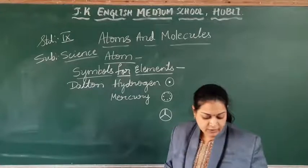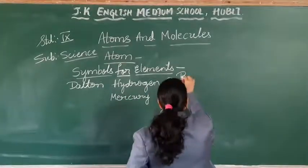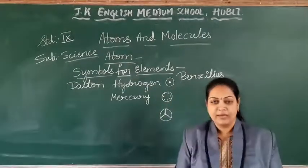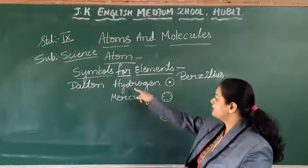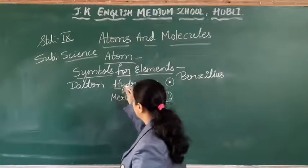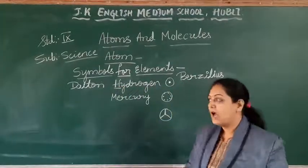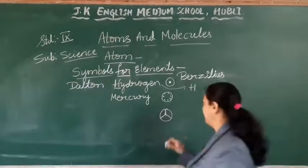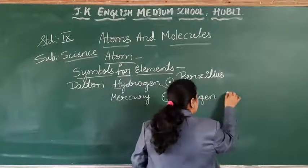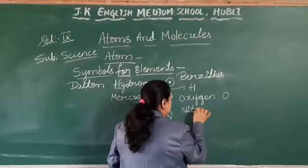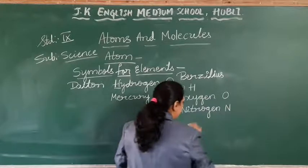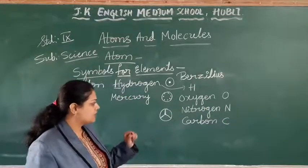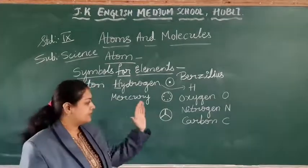So one of the scientists, J.J. Berzelius, suggested another method for giving symbols for elements. Instead of pictorial symbols, for example, hydrogen starts with H, so that H we will consider as the symbol for hydrogen. Oxygen — capital O. The first letter of the element's name will be considered as its symbol.